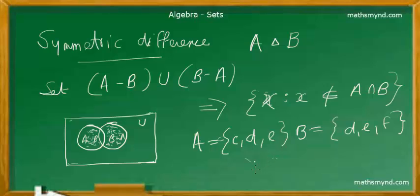So A symmetric B simply means that the common elements are not included, which simply means that in this case we will be having the elements C and F.